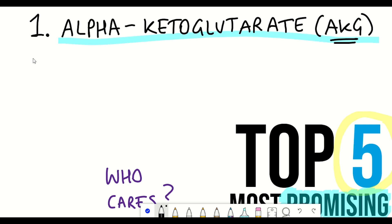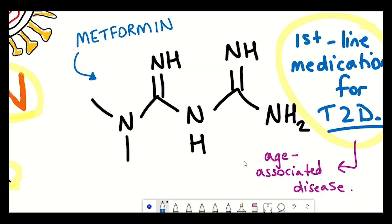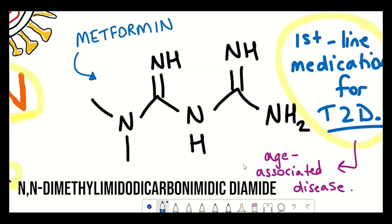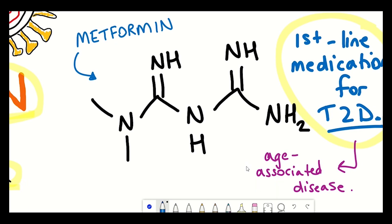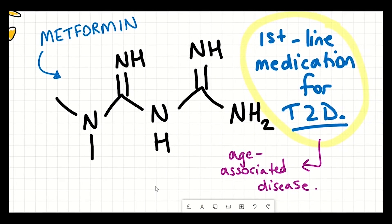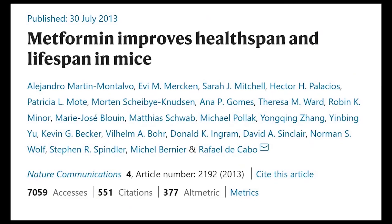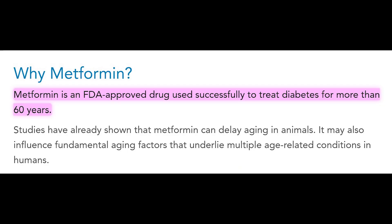Now next up on my list is metformin. Metformin is a medicine used to treat type 2 diabetes, and it can also be used when treating polycystic ovary syndrome. And like with AKG, metformin has been shown in a study to improve both health span and lifespan in mice. Now metformin has been used for more than 60 years in the treatment of type 2 diabetes, and generally it's been seen to be well tolerated.